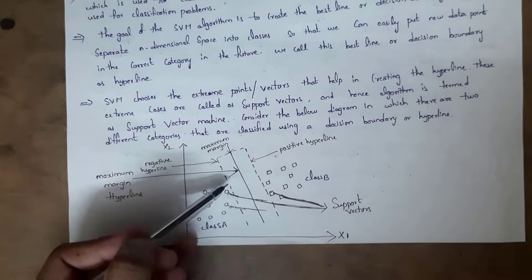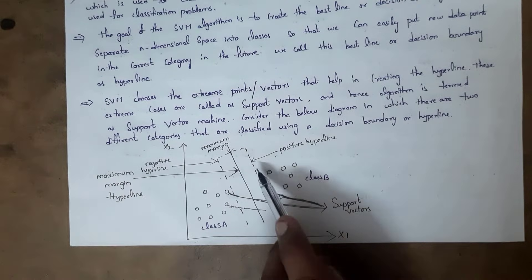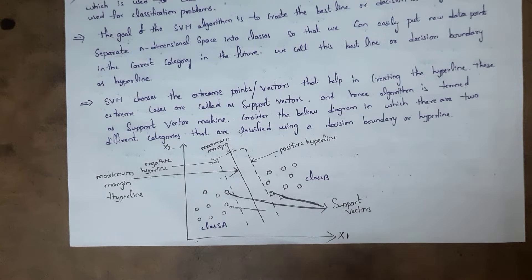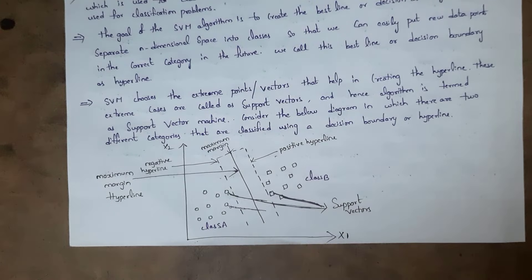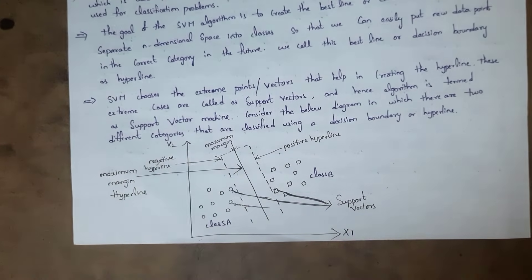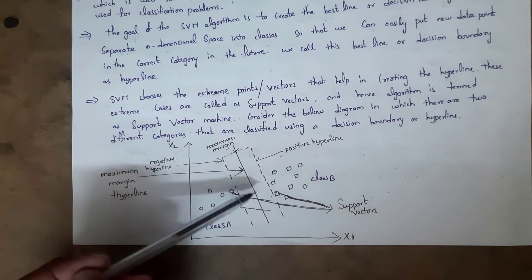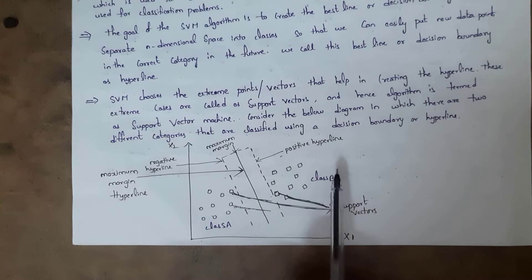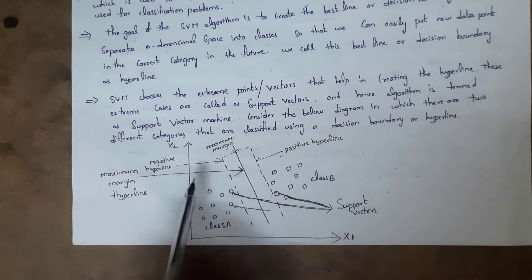The line which is close to the circle is known as the negative hyperplane, and the line which is close to the square is known as the positive hyperplane. The line in between the negative hyperplane and positive hyperplane is known as the central line. This central line, the hyperplane, will divide the data into two classes: class A and class B.